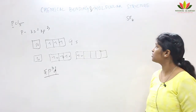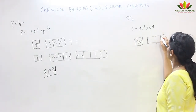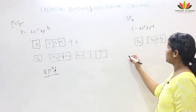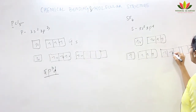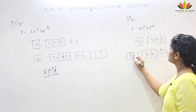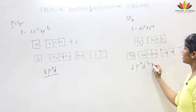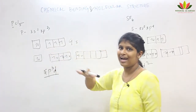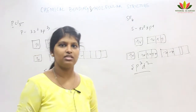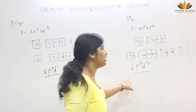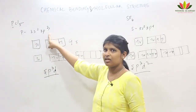For SF6, sulfur has the configuration 3S2 and 3P4. Since there are 6 fluorine atoms, we need 6 unpaired electrons. By promoting electrons into the empty d orbitals, we get 6 unpaired electrons. All 6 fluorines bond to these unpaired electrons. The hybridization is SP3D2, involving 1S, 3P, and 2D orbitals. The key is to know the correct electronic configuration of the element, otherwise the hybridization will be wrong.